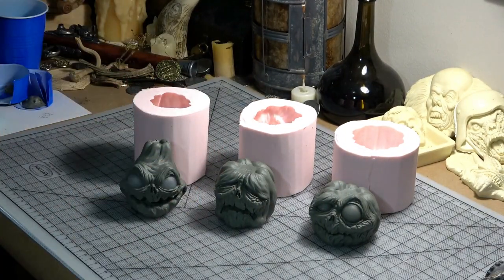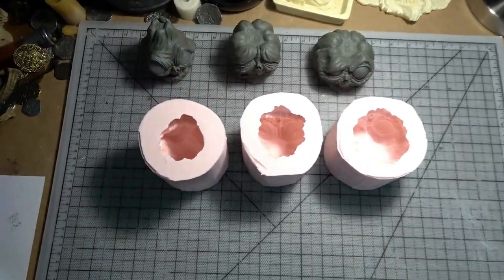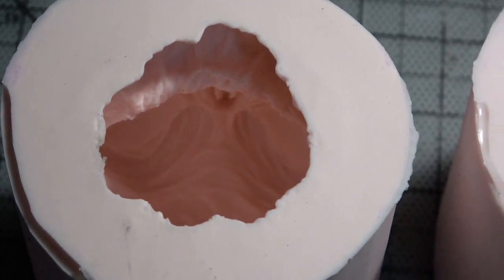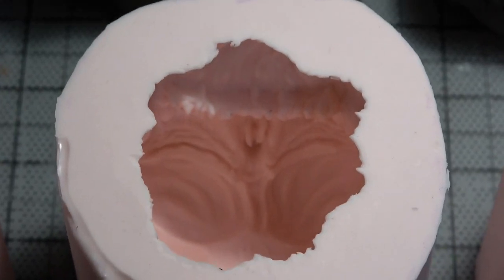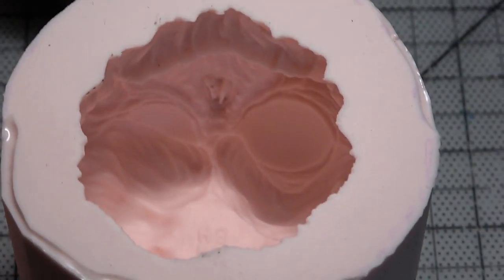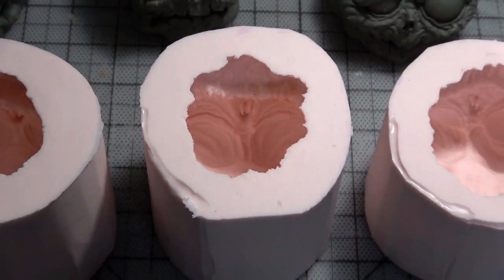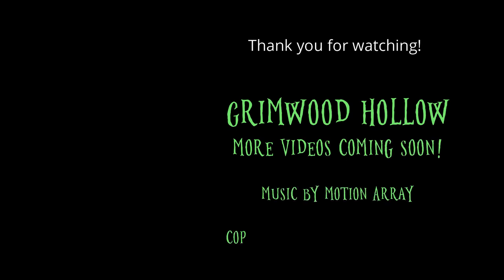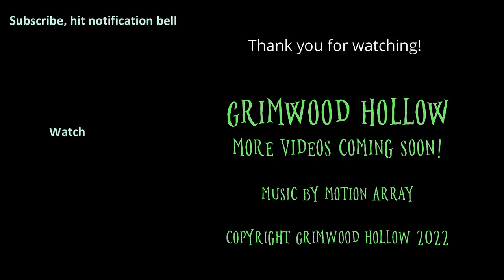And here's the finished silicone box molds of the baby pumpkin imps. Coming soon in part three, we'll be showing you how we cast all of these heads using urethane and rigid foam. Thanks again so much for watching, and we'll see you soon.